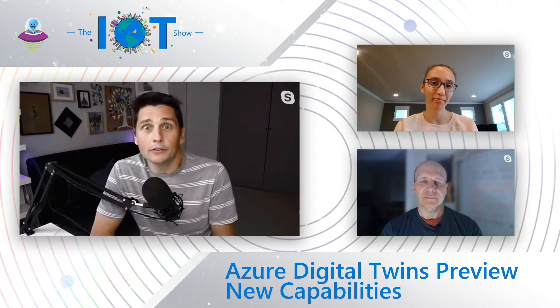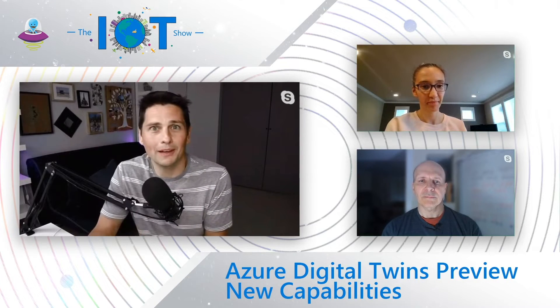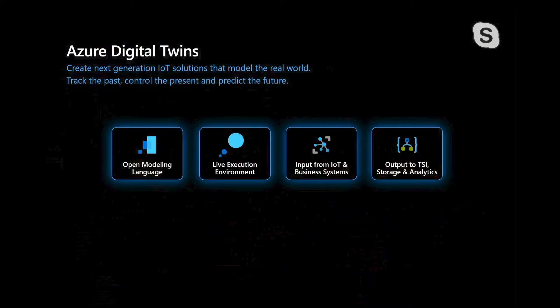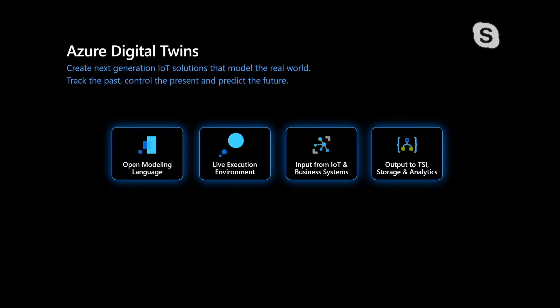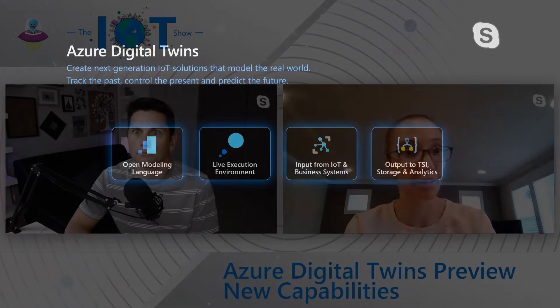Digital Twins is a service that has been announced something like a year ago. We did do some big announcements at Build a few weeks past, and we want to talk about these updates. So Ines, what's new about Digital Twins? We really have four core capabilities. One is the open modeling language — you can create your custom domain models using Digital Twins Definition Language, which is our open Digital Twins language. You can now model all sorts of things: people, places, things for a variety of use cases.